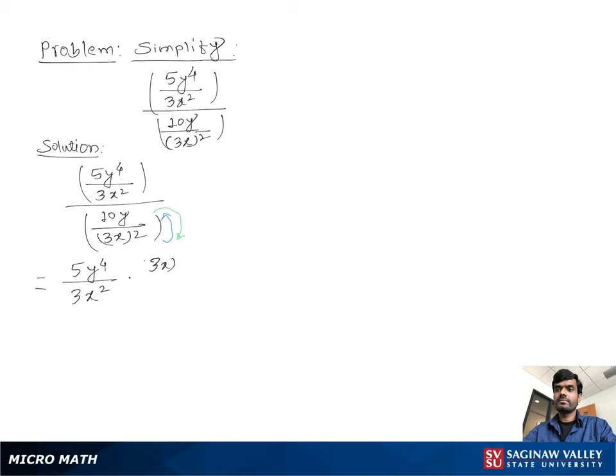So we can write 3x all to the square over 10y. Then we multiply top to top and bottom to bottom, so you can write 5y to the fourth times 3x all to the square, which becomes 9x square over 3x square times 10y.